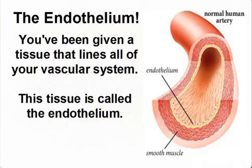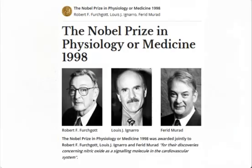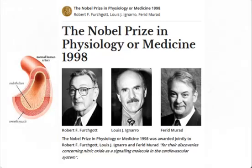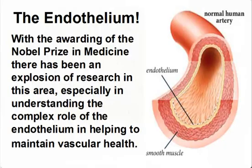You've been given a tissue that lines all of your vascular system. This tissue is called the endothelium. The 1998 Nobel Prize in Medicine was awarded to three American researchers for discovering how the endothelium converts the amino acid L-Arginine into nitric oxide, and how nitric oxide is the master signaling molecule of your entire cardiovascular system.